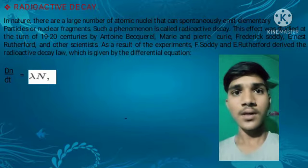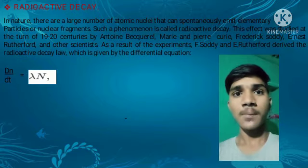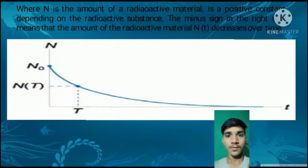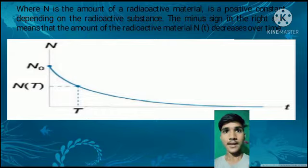As a result of experiments, F. Soddy and E. Rutherford derived the Radioactive Decay Law, which is given by the differential equation. Here N is the amount of radioactive material, and lambda is a positive constant depending on the radioactive substance. The minus sign on the right side means that the amount of radioactive material N(T) decreases over time.